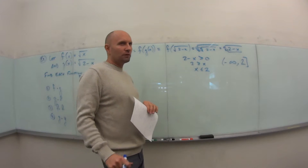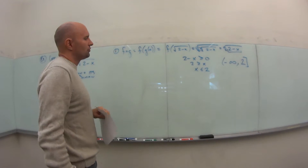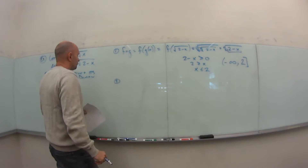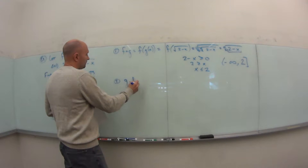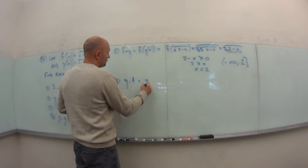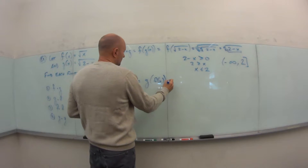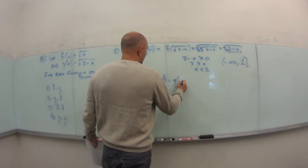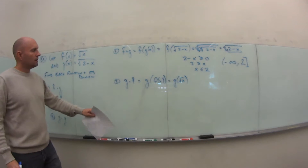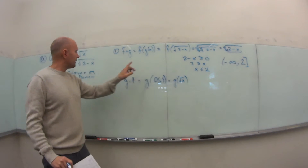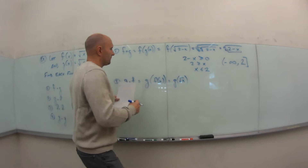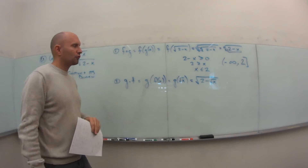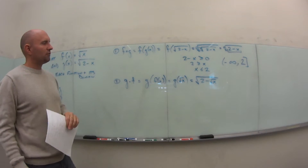Let's do number 2 together since the domain gets tricky. For g∘f, this means g of f(x). Since f(x) = √x, this is g(√x). Plugging √x into g anywhere we have an x gives us √(2 − √x). That's our composite function.